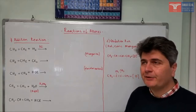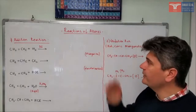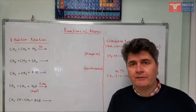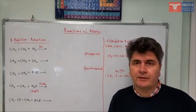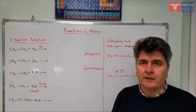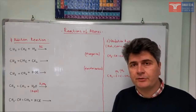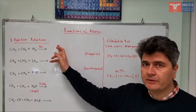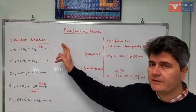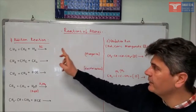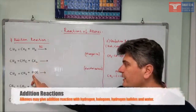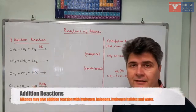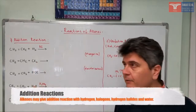Hello, in this video we will talk about reactions of alkenes. Alkenes are relatively more active than alkanes. Similar to all other unsaturated compounds, they may give addition reactions with hydrogen, halogens, hydrogen halides, and water molecules. Let's see them one by one.